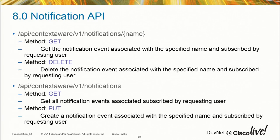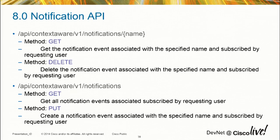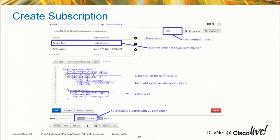Finally, we get to the notification API. Those previous APIs were all query-based, but if you want to see what's going on in your network in real-time without polling, we can send you events. We have APIs for getting a specific event by name that you've already registered for, deleting it, or programmatically creating your own. When you create the subscription, you specify the notification format, where you want it sent, which port, and the event type.